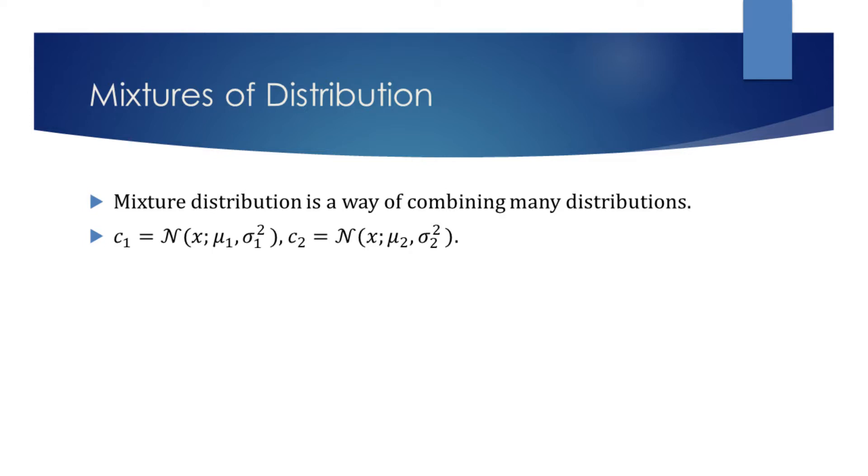When sampling from the mixture distribution with countable components, the categorical distribution is used to determine for which component to generate a sample.